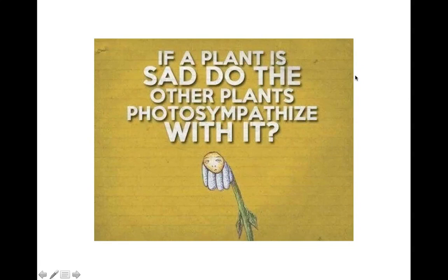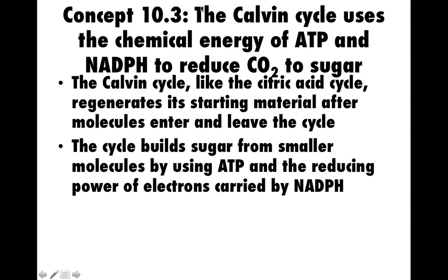If a plant is sad, do the other plants photosympathize with it? So the Calvin cycle — as if it wasn't already an amazing feat that sunlight is powerful enough to oxidize oxygen — we're going to take carbon dioxide, which is a very oxidized form of carbon, and channel that energy to reduce that carbon and make sugar. The Calvin cycle, like the citric acid cycle, regenerates the starting material.